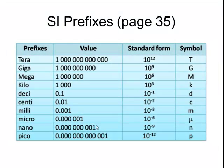There are many different prefixes that we use when we use SI base units. These prefixes include tera, giga, mega, kilo, deci, centi, milli, micro, nano, and pico.